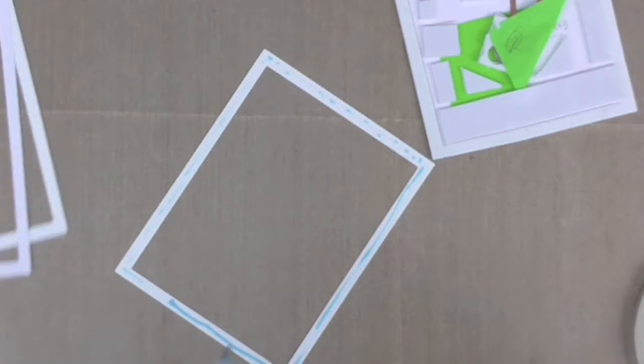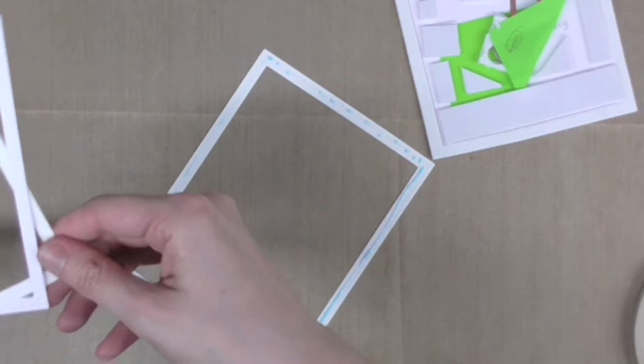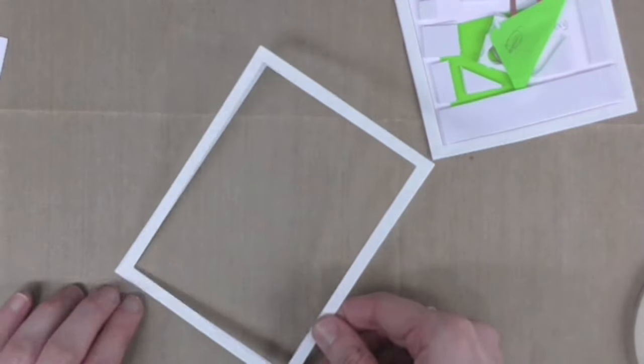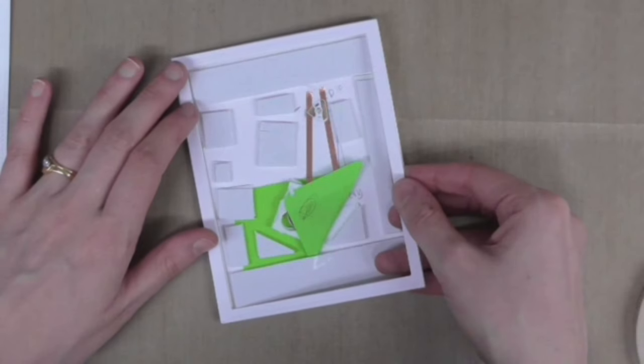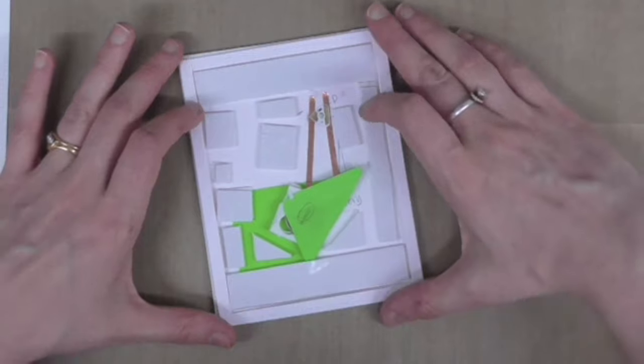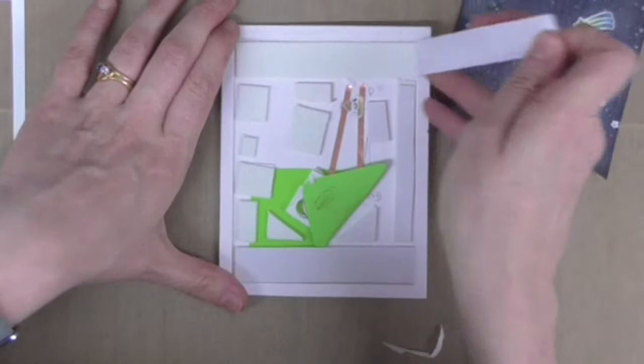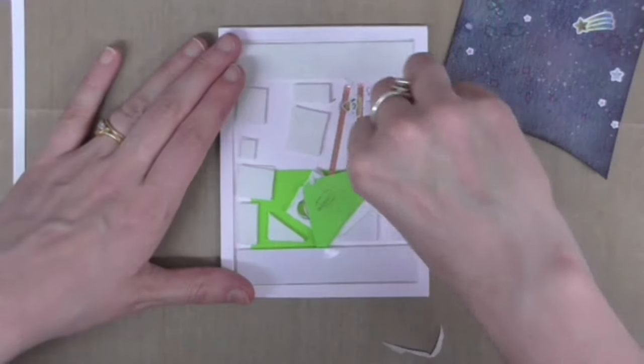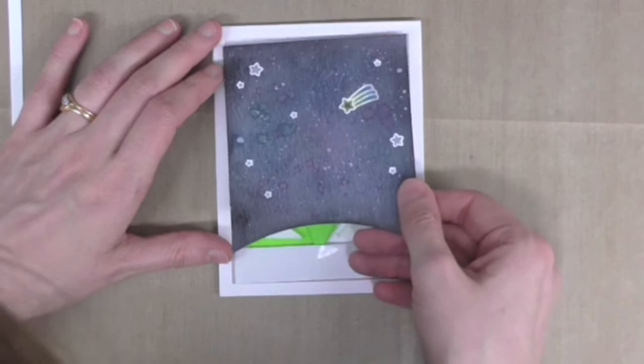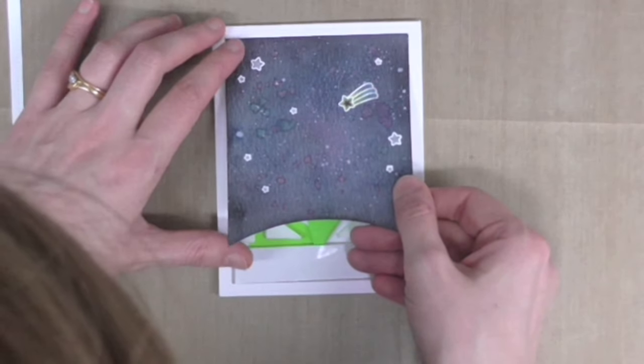I'd also cut out some of the same size frames using some thick cardstock, so I'm sticking them together with a glue pen. I can adhere that onto the top of the craft foam, and then I can stick my nighttime sky panel right on top here.